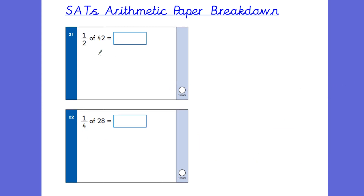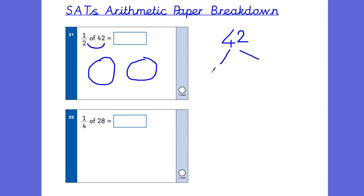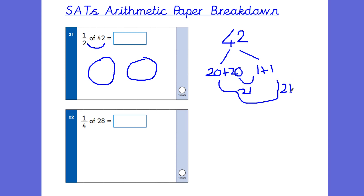Question 21 is a fractions question: a half of 42. Draw two groups and split 42 into those. Rather than drawing all those dots, partition 42: split 40 into two parts giving 20 and 20, and split 2 into two parts giving 1 and 1. So one person would get 21 and another person would get 21. Using partitioning of tens and ones gives 21 as the answer.